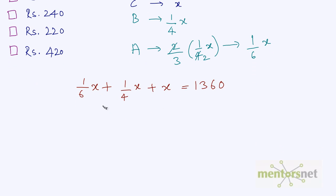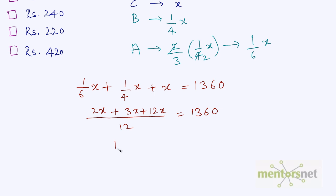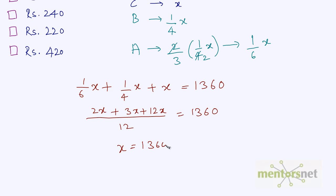The LCM of four and six is twelve, so in the denominator we have twelve. Six times two is twelve, so we have 2X; four times three is twelve, so we have 3X; twelve times one is twelve, so we have 12X. This becomes 17 by 12 X equals 1360, so X equals 1360 times 12 divided by 17. Since 17 times 80 is 1360, we get X equal to 80 times 12.